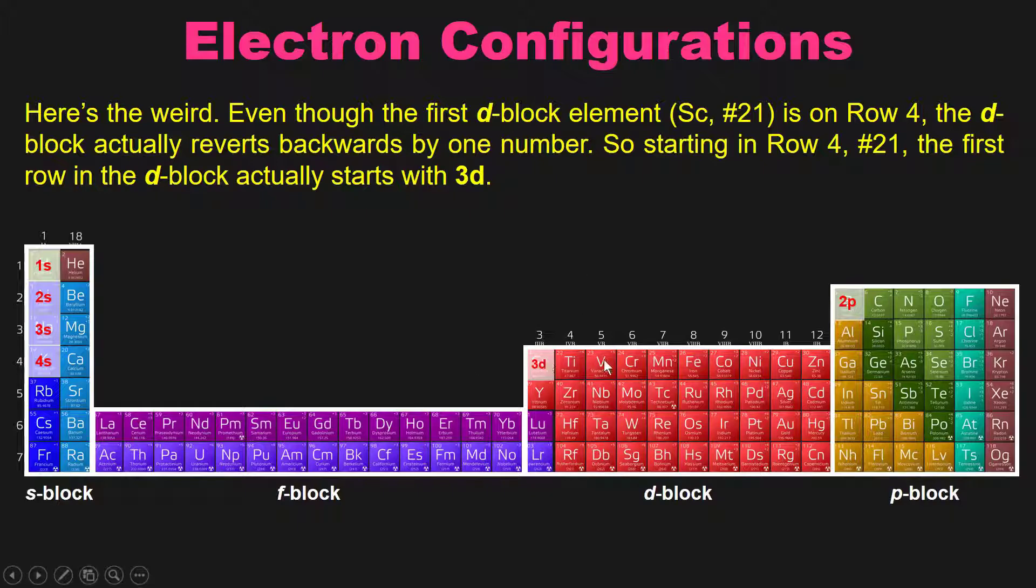Then we work our way through the D block, 3d, 1, 2, 3, 4, 5, 6, 7, 8, 9, 10. And then we hit the P block again. And the P block reverts backwards to 4p. So the P block and S block follow the rows they're on exactly as you predict. But the D block reverts backwards by one number relative to the row that's on. Weird? Yes. Do you have to know it? Absolutely.